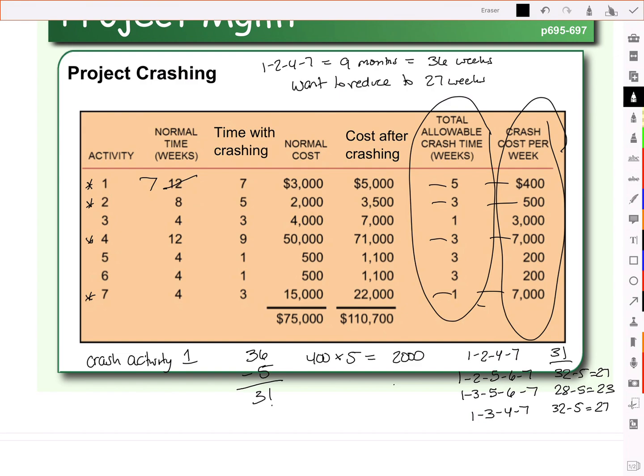Speed it up. So notice we can crash 3 weeks. So let's take our 31 weeks, and we'll subtract from that 3 more weeks. So 31 minus 3 puts us at 28. And the cost of that will be the $500 times 3 weeks, or $1,800.